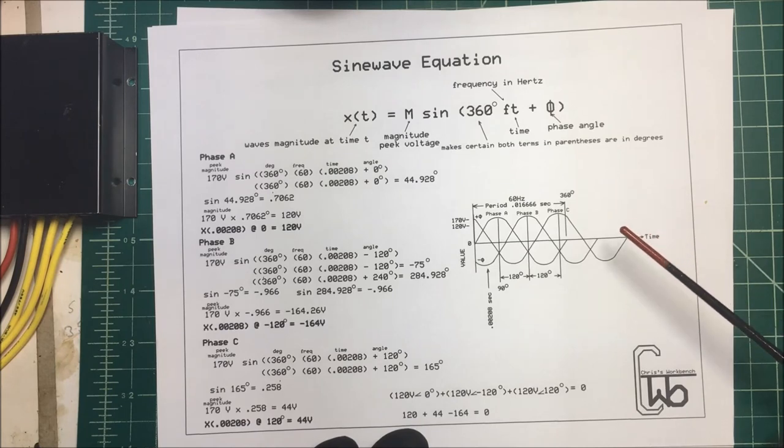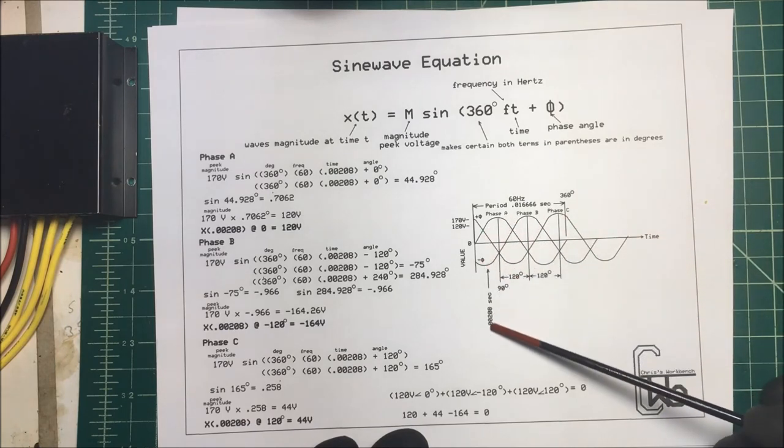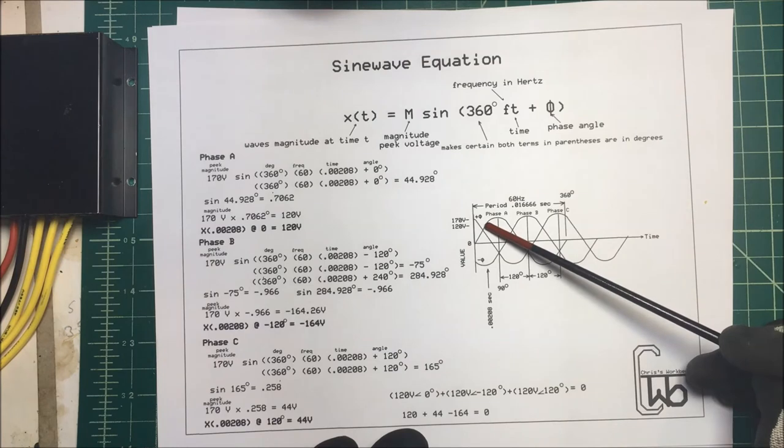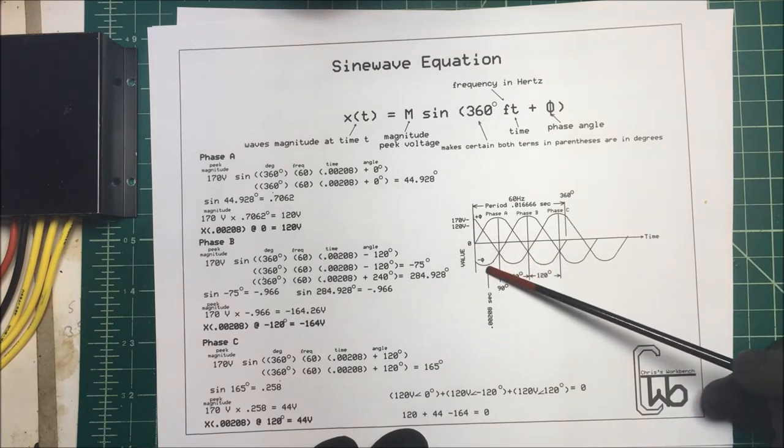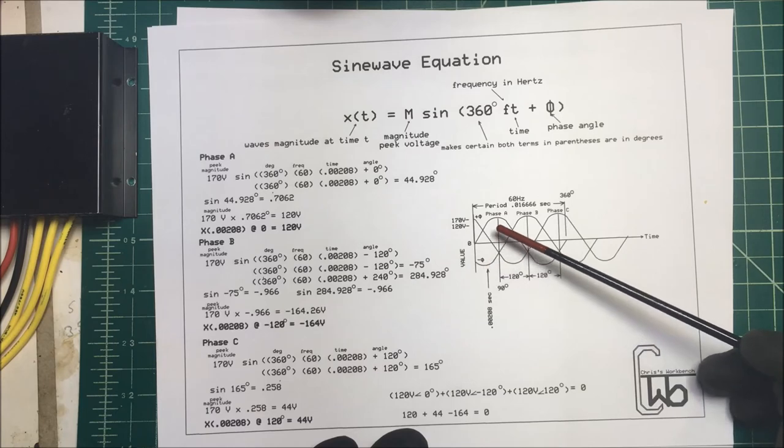So at this time, our phase A is going to be at 120 volts, phase B is going to be at minus 164 volts, and phase C is going to be up here at 44 volts.